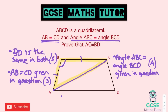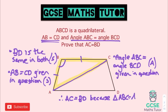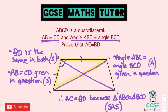So: triangle ABC is congruent to triangle BCD by SAS — angle in between the two sides. Therefore, AC must equal BD because the triangles are congruent. That's how we go about doing geometric proofs using congruent triangles.